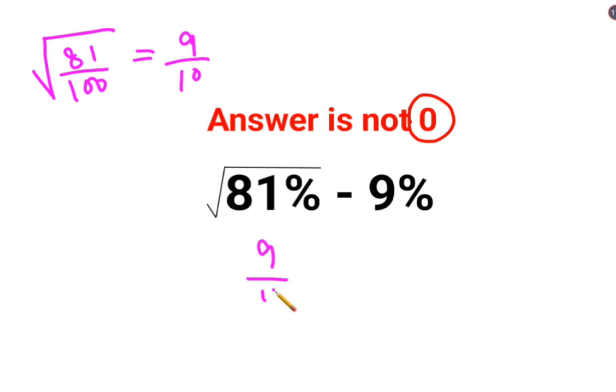So this becomes 9 upon 10 subtracting 9%, which is 9 upon 100. Now you cannot do direct subtraction because the denominators are different.